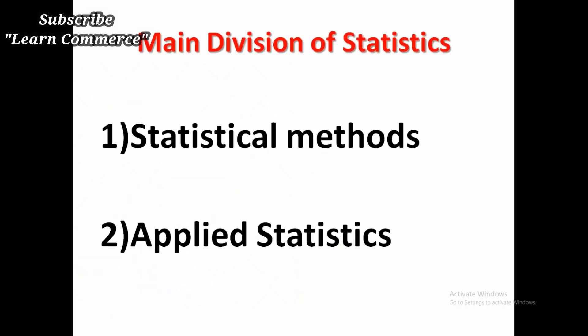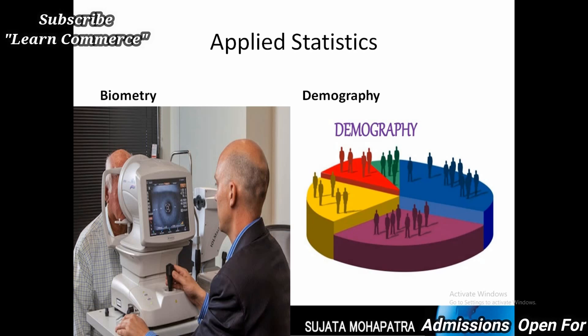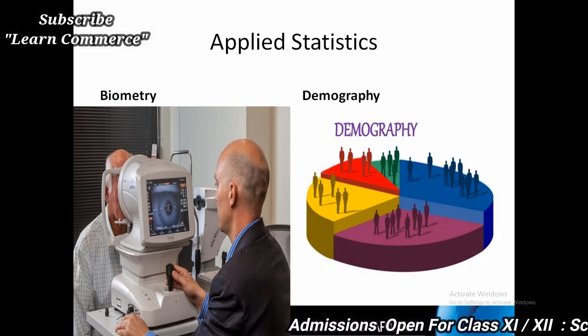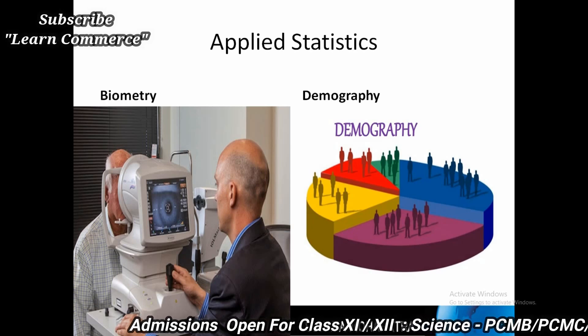Next, let's see the main divisions or branches of statistics. There are two important branches of statistics. The first is statistical methods and applied statistics. Statistical methods are also known as mathematical statistics or theory of statistics. It deals with the procedure of statistical analysis of numerical data, and is a tool for decision making. Applied statistics is the application of statistical methods to situations like agriculture, industry, population, and medicine, etc.